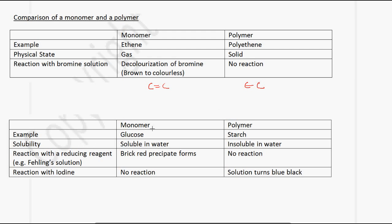Another example is glucose and starch. Glucose is the monomer and starch is the polymer. Glucose is soluble in water, but starch is insoluble in water. Glucose reacts with a reducing agent like Fehling's solution to produce a brick red precipitate — you do not get this reaction with starch. In the case of the reaction with iodine, glucose has no reaction, however starch will turn the solution blue-black.